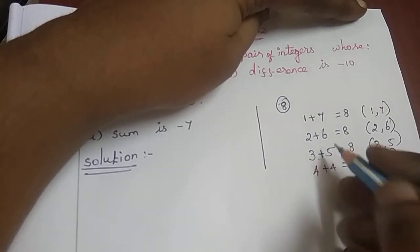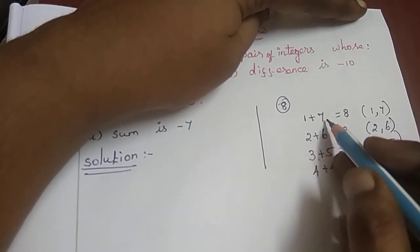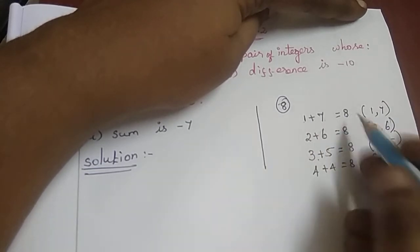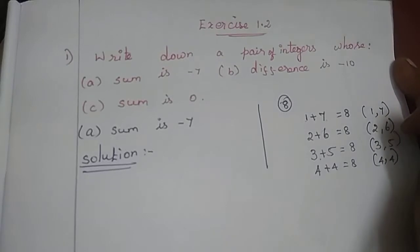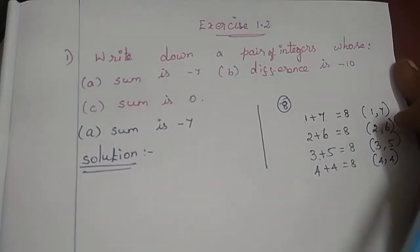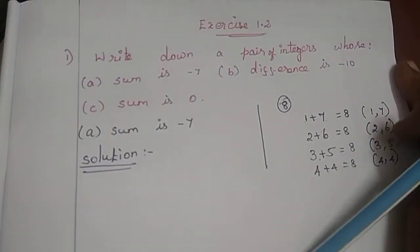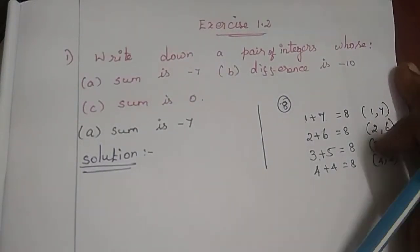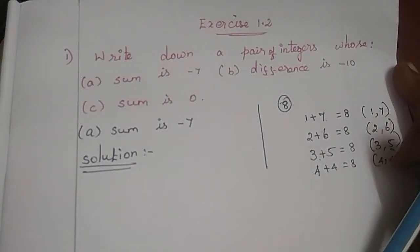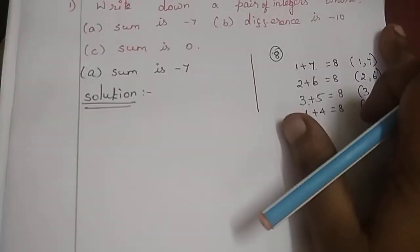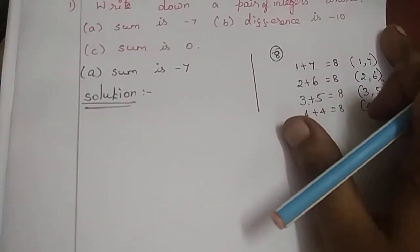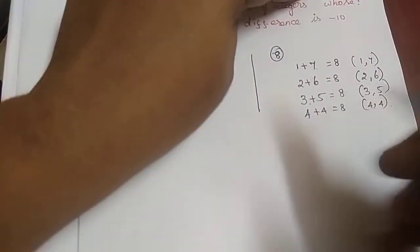The reverse pairs are: 5 plus 3, 6 plus 2, 7 plus 1. So your set of pairs includes 7,1 and 6,2 and 5,3 and 4,4.